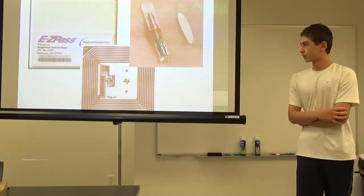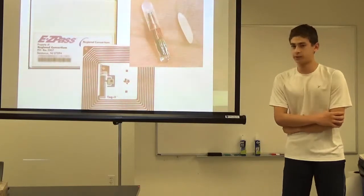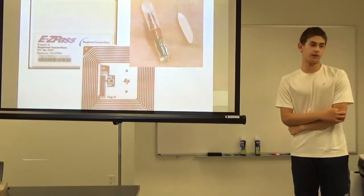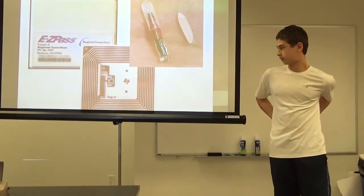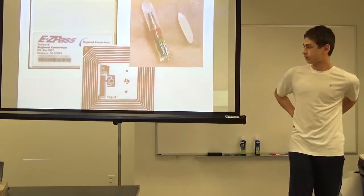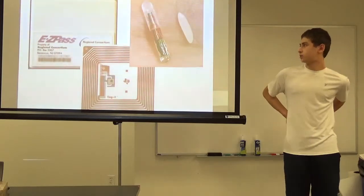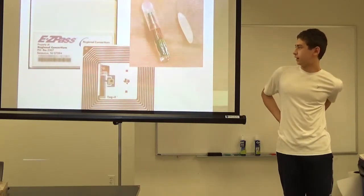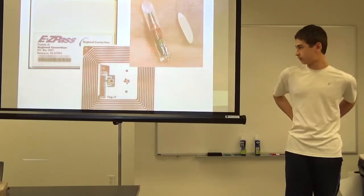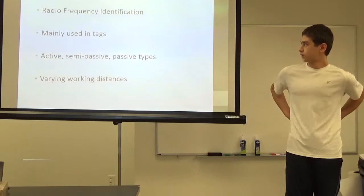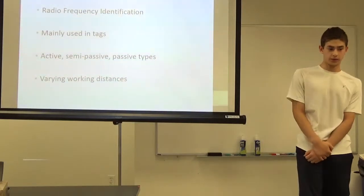What is RFID? On the left you can see an EasyPass. EasyPass uses RFID for identification through automatic tolling processes. In the middle you have a flat RFID tag, which is usually used for shipping. And then on the right, which I found pretty interesting, it's an RFID tag about the size of a grain of rice. It's used for tracking purposes. RFID stands for radio frequency identification. It's mainly used in tags and tracking.